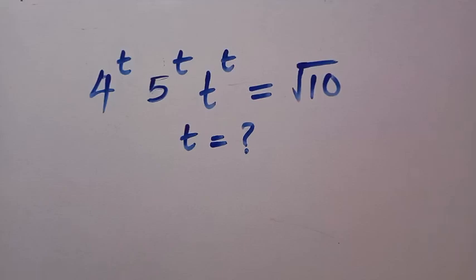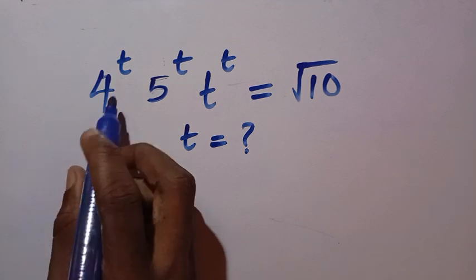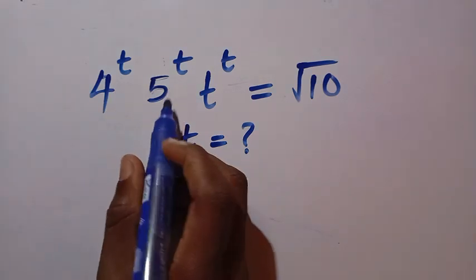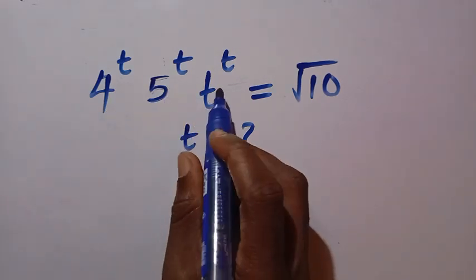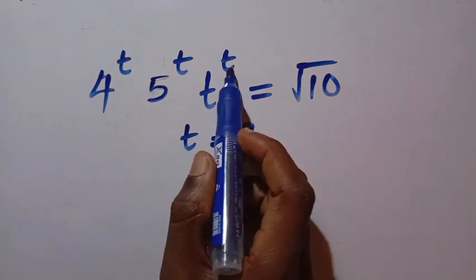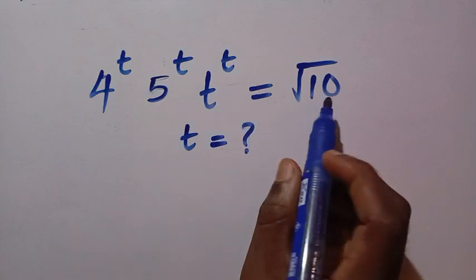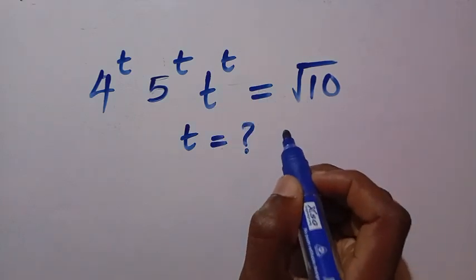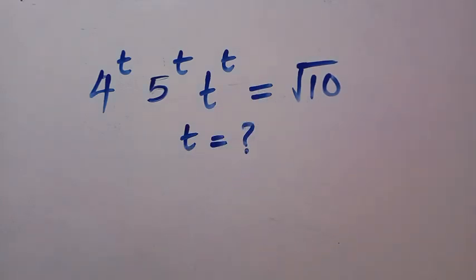Good day viewers, you are welcome. Today we're solving a nice exponential equation where we have different bases but the same power on the left-hand side. We are given 4 to the power of t, multiplied by 5 to the power of t, multiplied by t to the power of t, equals the square root of 10. I want to find the value of t that satisfies this equation.